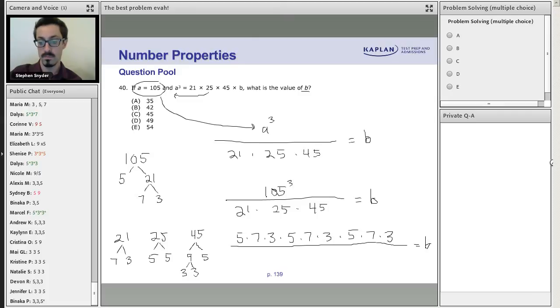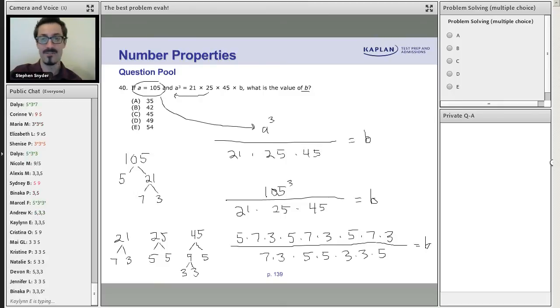Now on the bottom, instead of 21, let's just write 7 times 3. Instead of 25, let's just write 5 times 5. And instead of 45, let's just write 3 times 3 times 5.